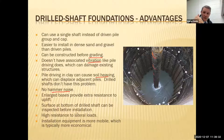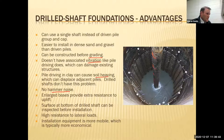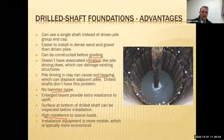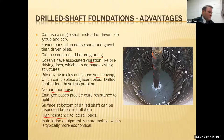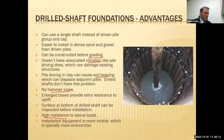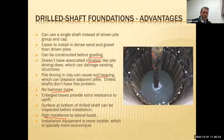Drilled shafts can be inspected — they're big enough to send people down in two-, three-, four-, or ten-foot diameter holes to check for slough and verify the bell is properly installed. You can also send a camera down to inspect the bottom. They have high resistance to lateral loads with all the steel you can put in them — ideal for something like a big windmill that has a lot of lateral loads from wind. The installation equipment is more mobile, typically more economical, and can operate on hillsides and swamplands.